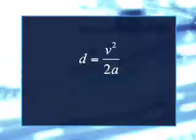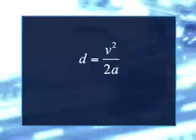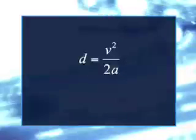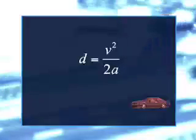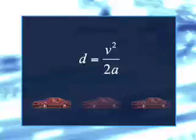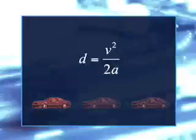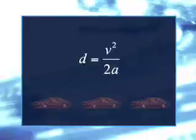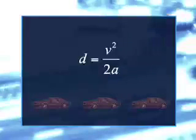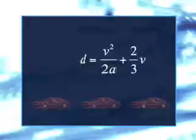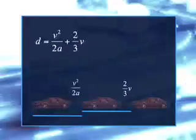But this equation assumes that you instantaneously step on the brakes. But there is usually a split second between the time you need to stop and the time you step on the brakes. During that time, the car is still moving at speed v. Assume that it takes two-thirds of a second to react. Our stopping distance equation becomes d equals v squared over 2a plus two-thirds v.